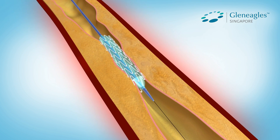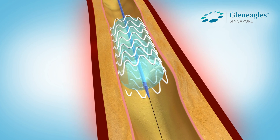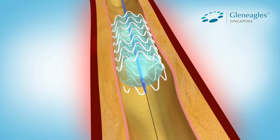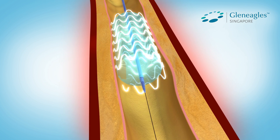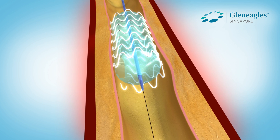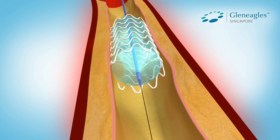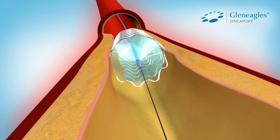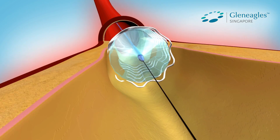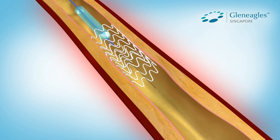Once in place, the balloon is inflated, which compresses the plaque against the artery wall and stretches the artery open to allow an increase of blood flow to the heart. In most cases, a small metal mesh tube known as a stent is expanded together with the balloon, acting as a scaffold to support the artery by expanding to its size and holding it open. The balloon is then deflated and removed while the stent is locked in place to prevent future deposits.